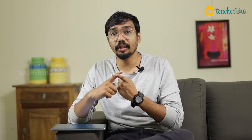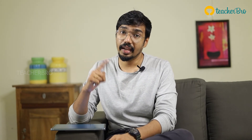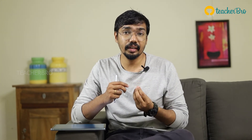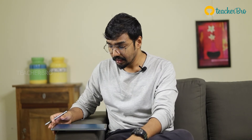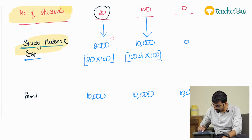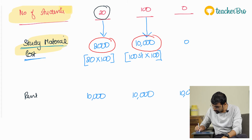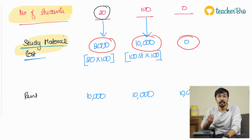Fixed cost is any expense which remains constant up to 100% capacity. Variable cost is any expense which increases or decreases proportionately with respect to change in level of activity. The nature of variable cost: total variable cost will increase or decrease, but variable cost per unit will remain the same.